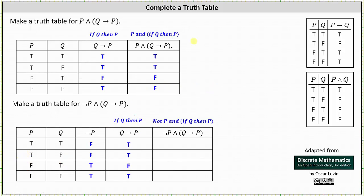For the last column, the conjunction not p and if q then p is true only when not p is true and if q then p is true; otherwise the conjunction is false. Analyzing the third and fourth columns, not p is true and if q then p is true only in the fourth row, so the conjunction is true only in row four and false in all other rows. The last column is false, false, false, true.